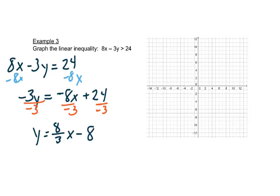So we'll graph that over here. We'll have a negative 8 right here, and then we'll go up 8 over 3, up 8 over 3.